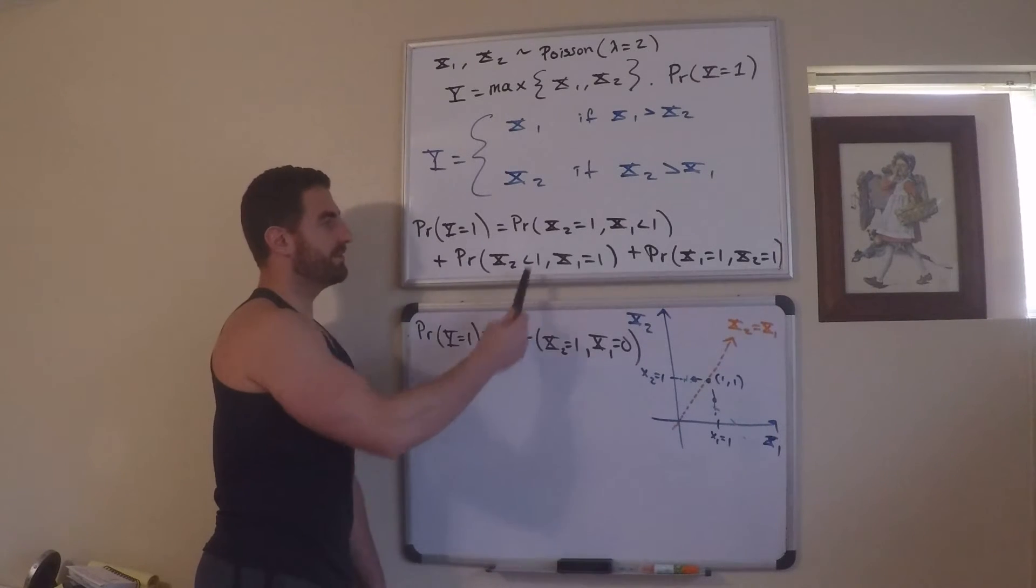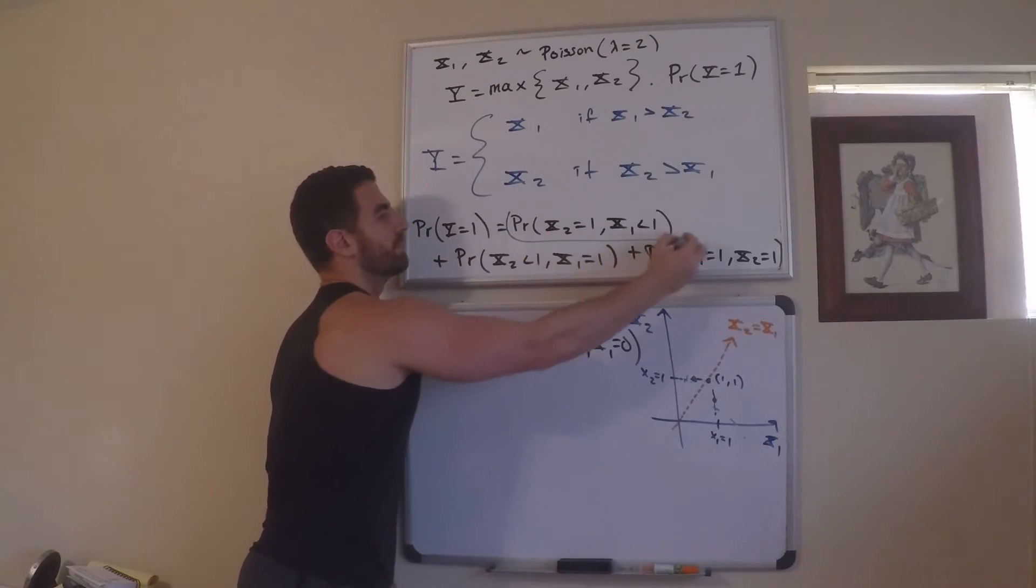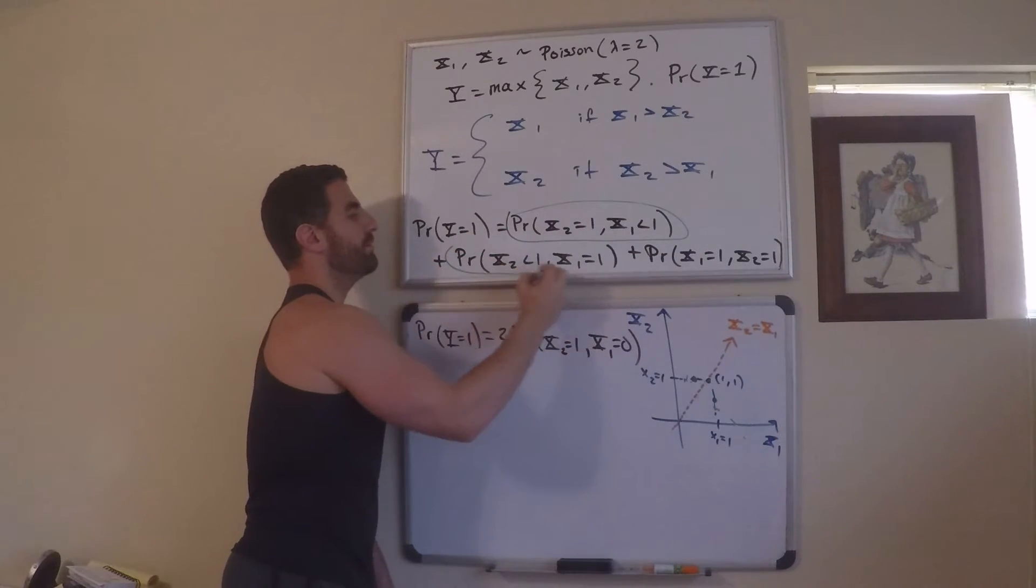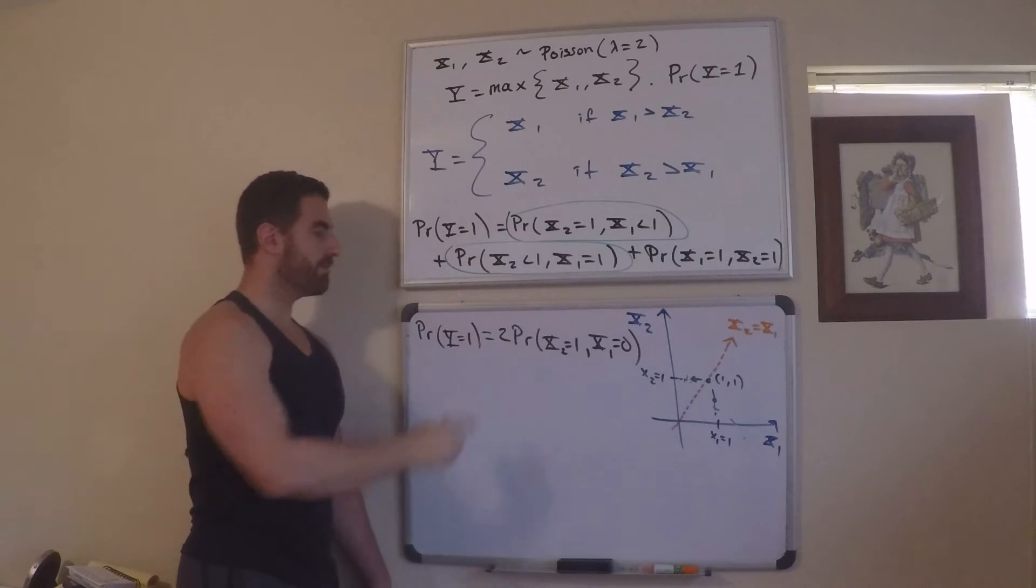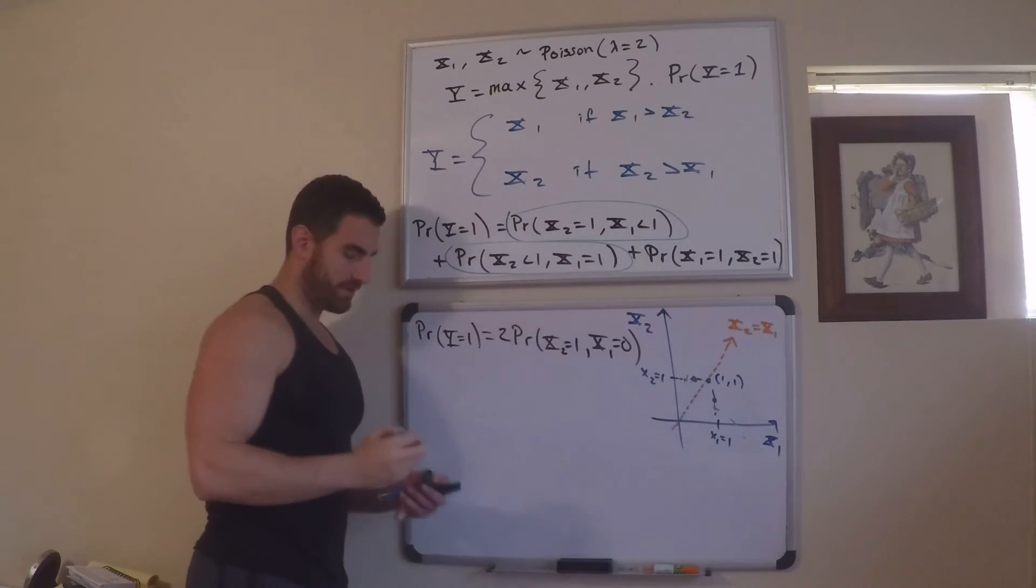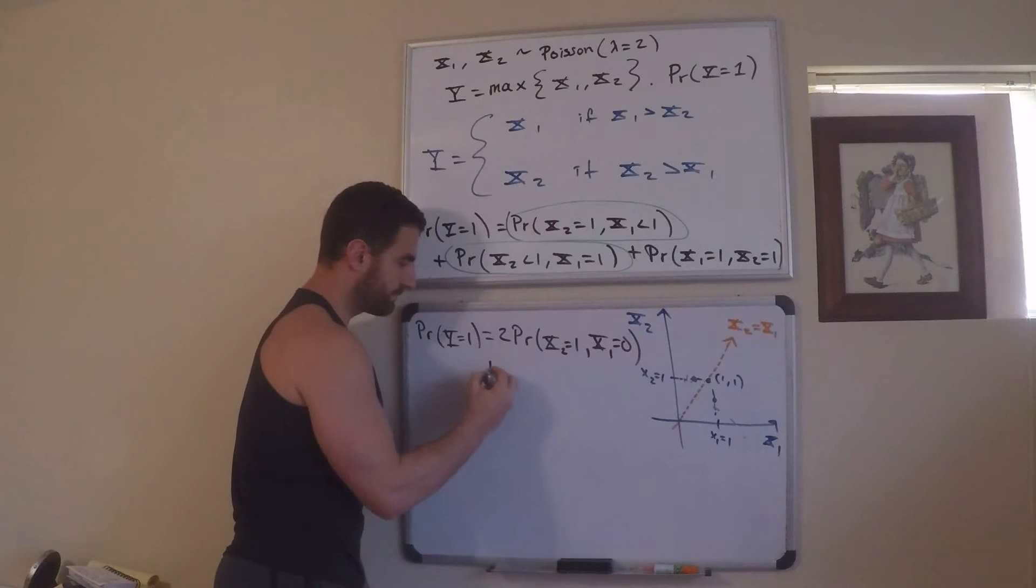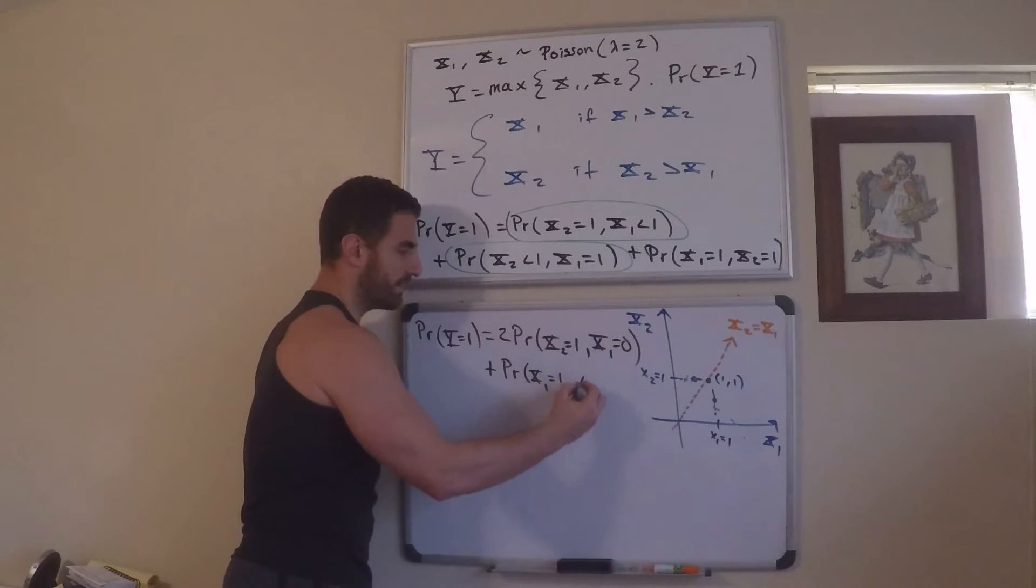I have the 2 here because, again, these two are equal. So, this quantity, this probability, and this probability are equal. I have two of them. So, I'll replace that with twice the first. The last thing I need is x1 and x2 both equal 1. So, plus the probability x1 equals 1 and x2 equals 1.